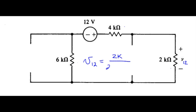Total series resistance is simply the sum of those three resistances, multiply by 12 volts.